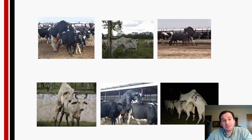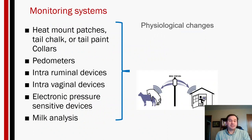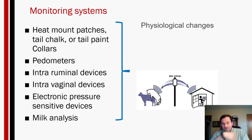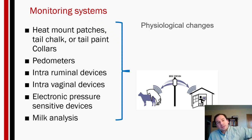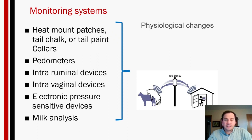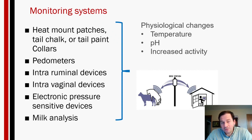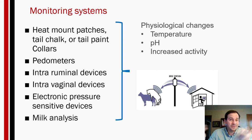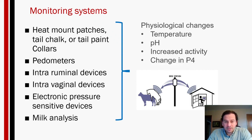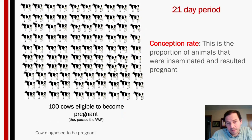Many farms use monitoring systems to detect heat, including ear tags, activity bracelets, tail paint, rumen boluses, and intravaginal devices. Most systems measure increased activity and decreased rumination time, since cows in heat are more active and spend less time ruminating. Some modern systems can also assess progesterone levels in milk, increasing body temperature, and changes in vaginal pH.